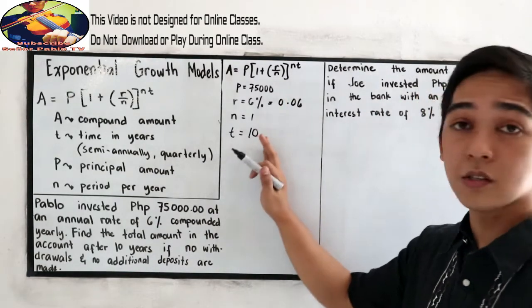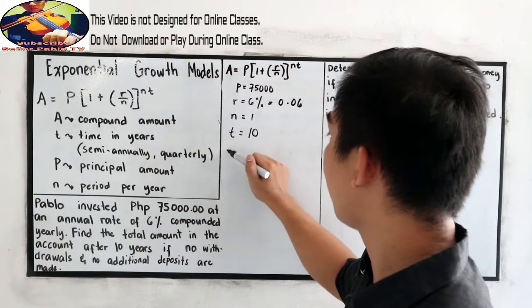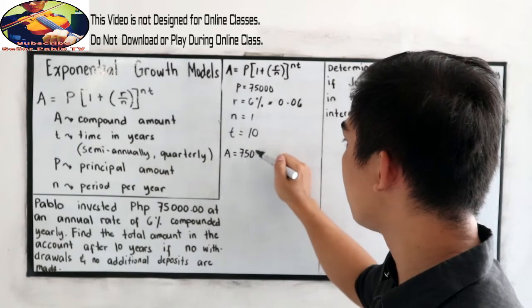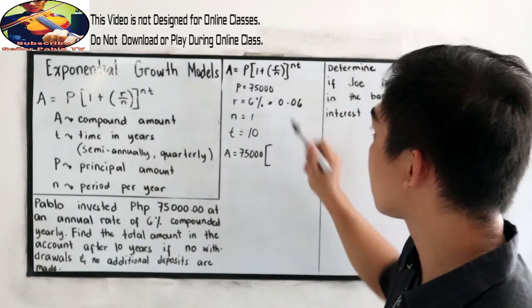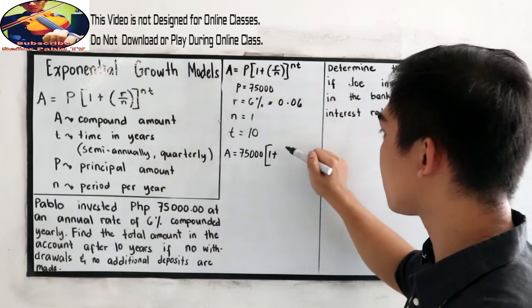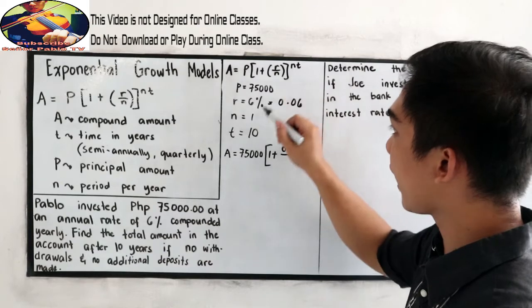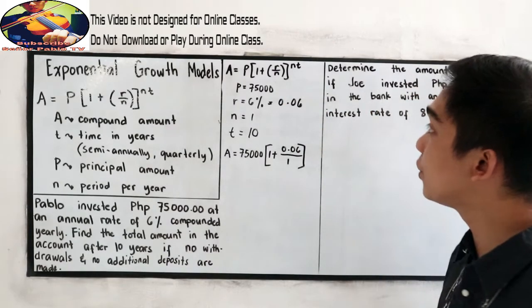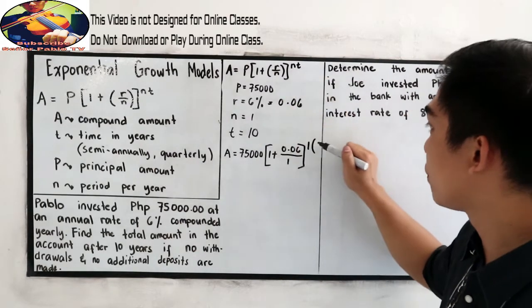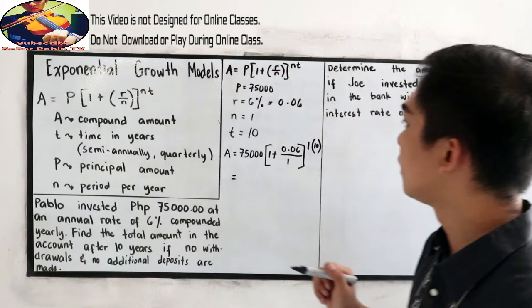After finding the values for P, R, N, and T, substitute our formula. So, we have A is equal to P is 75,000 times 1 plus our R, the rate is 0.06 over our N is 1, raised to N is 1 times our time, we have 10 years.